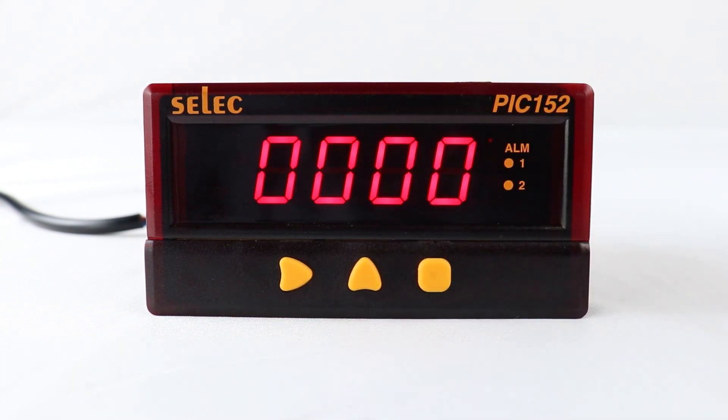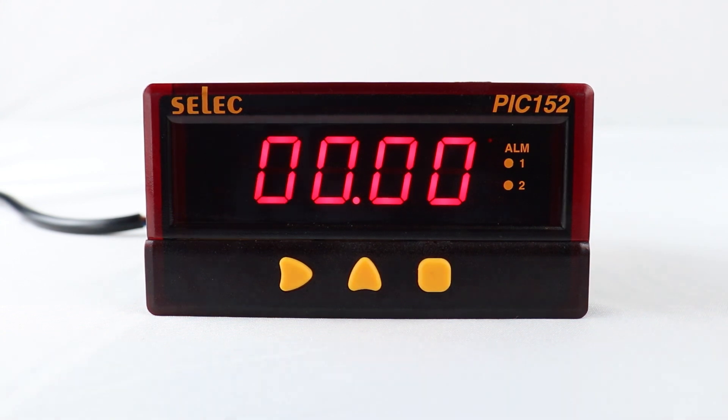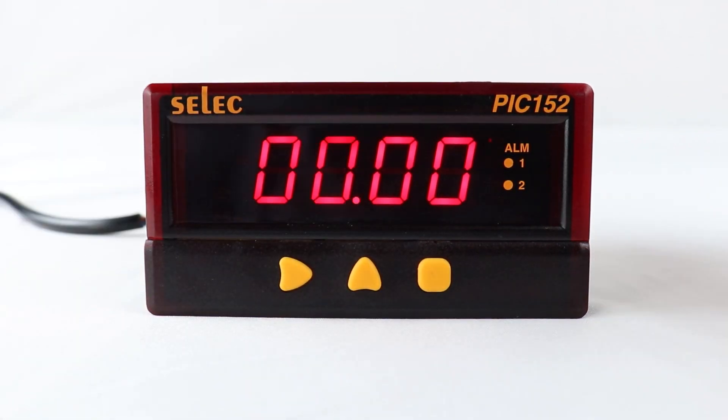Press square key to set display value scaling point B at low, DSCL as 0 by using up arrow key. Similarly, set input value scaling point B at low, DSCL, as 4 milliamperes with the help of up arrow key.